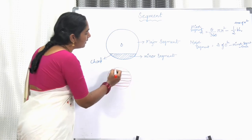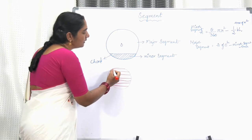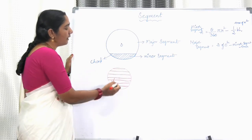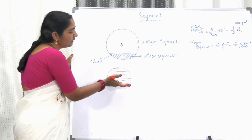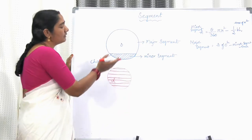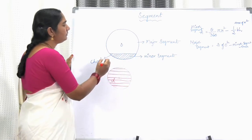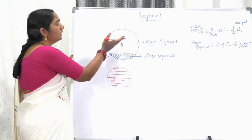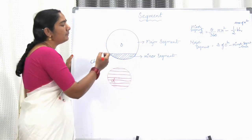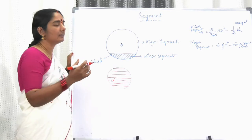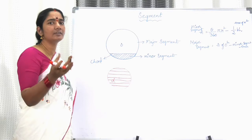A chord is nothing but a line which can cut the circle into two parts. If you take this line as a chord, we have taken one chord here and we are cutting the circle into two parts. This smaller part we call the minor segment, because it is minor.